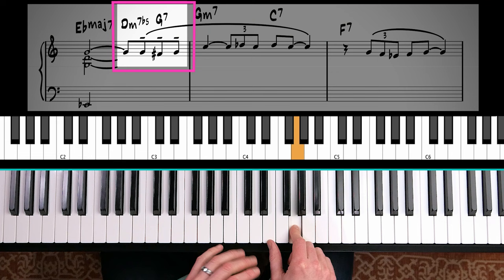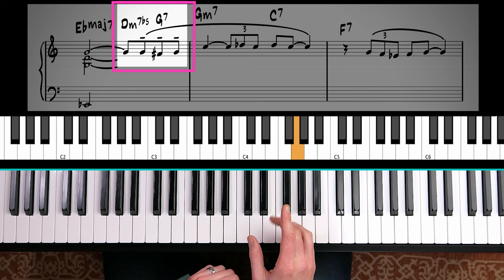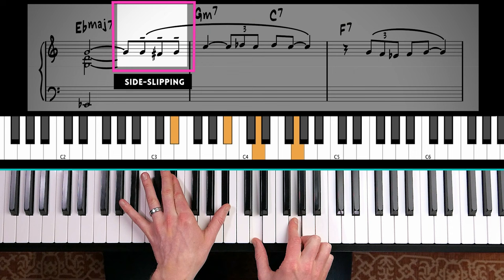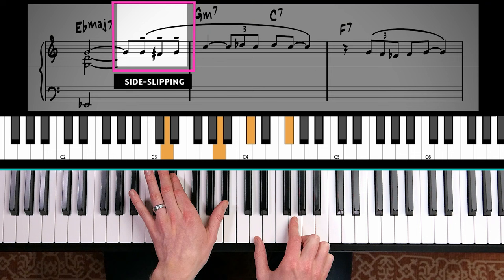Whenever I see that sort of shape where the melody goes a note away and then comes back, I like to use side slipping. So side slipping is where you take the chord voicing that you have on the first chord and you move the chord voicing with it.